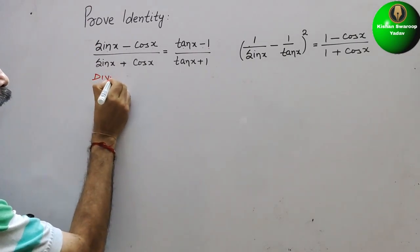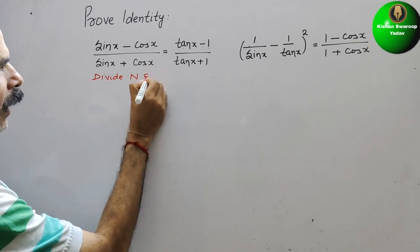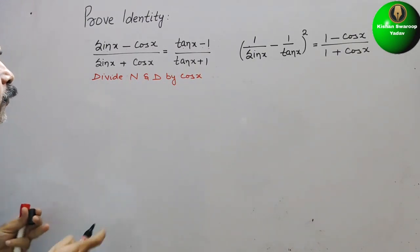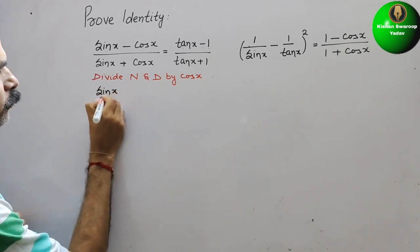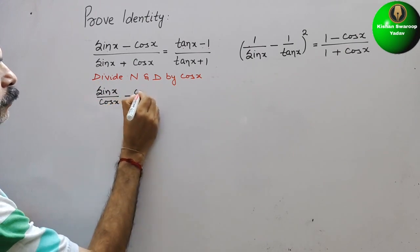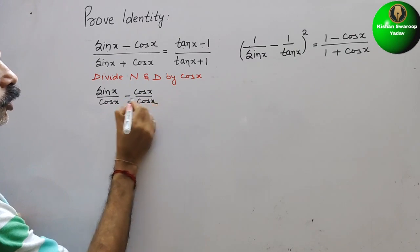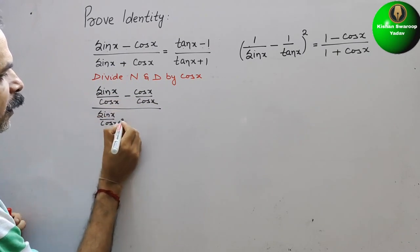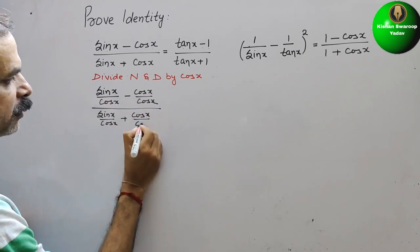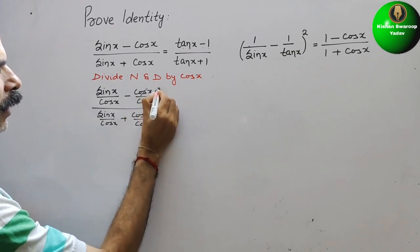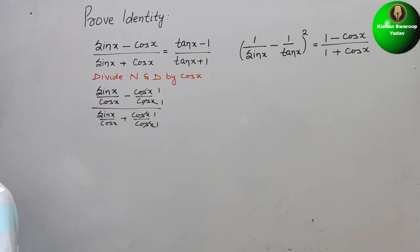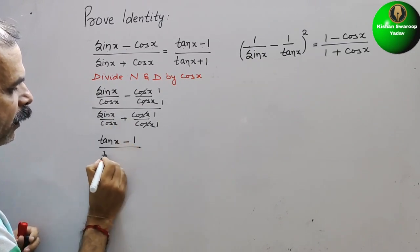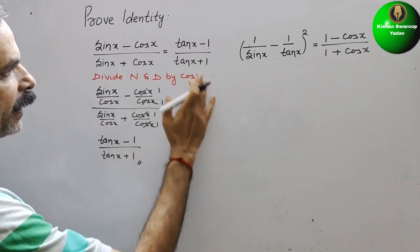So we will divide numerator and denominator by cos x. In the numerator we get sin x/cos x minus cos x/cos x. The denominator becomes sin x/cos x plus cos x/cos x. Now cos x/cos x cancels to 1, and we know that sin x/cos x is tan x, so we get (tan x - 1)/(tan x + 1). This is your LHS, and RHS is also the same.